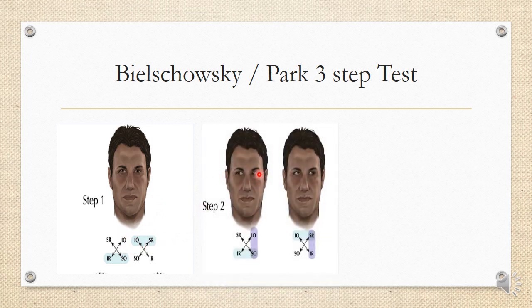Step two: ask the patient to look into dextro and levo version and observe in which direction hypertropia increases. If hypertropia increases on left gaze and decreases on right gaze, a left-sided muscle is implicated — either the right inferior or superior oblique, or the left superior or inferior rectus. Circle the muscles responsible for that gaze direction.